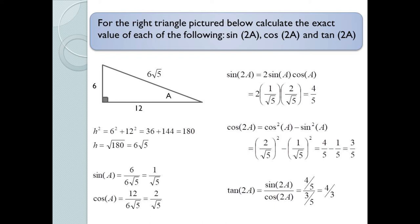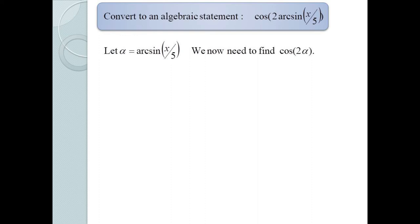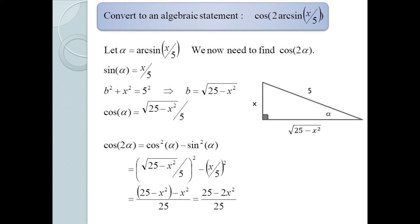Let's finish with a problem involving inverse trig functions. We want to convert cos(2 · arcsin(x/5)) to an algebraic expression. Let α = arcsin(x/5), so sin α = x/5. Drawing a right triangle, the missing side is √(25 − x²), so cos α = √(25 − x²)/5. Then cos(2α) = cos²α − sin²α = (25 − x²)/25 − x²/25 = (25 − 2x²)/25.